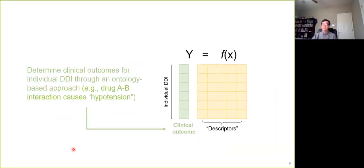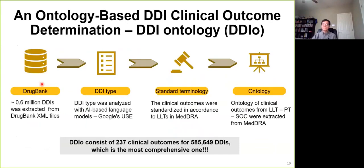So let's work through this flow. So first, how to determine a clinical outcome for individual drug-drug interactions? To do this, we developed a drug-drug interaction ontology. We call it DDIO. So here is the workflow to generate the DDIO. I'll give you a very quick introduction. First, we extract the drug-drug interaction descriptions from DrugBank - there's around 0.6 million of them.